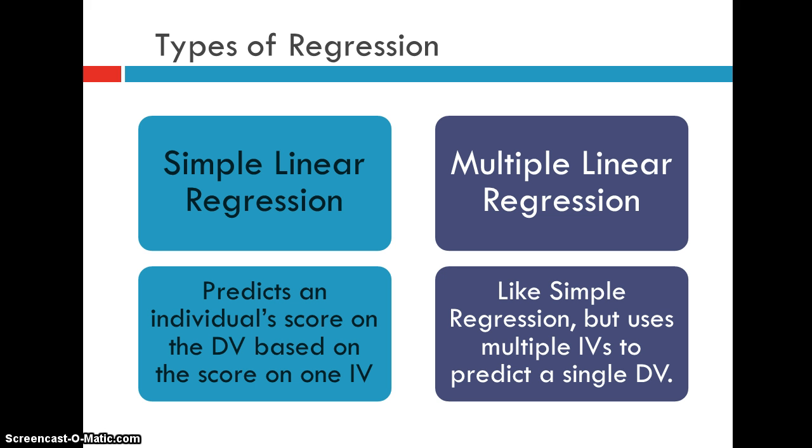With multiple linear regression, it's like simple regression, but now we have more than one independent variable that we're using to predict a single dependent variable. So we could say something like, let's predict who's going to do well in graduate school. So we can look at their GRE score and we can also look at their GPA as two different predictors. And perhaps we have some rating scale for letters of recommendation, and we could look at that as well. So that would be a case of multiple linear regression.